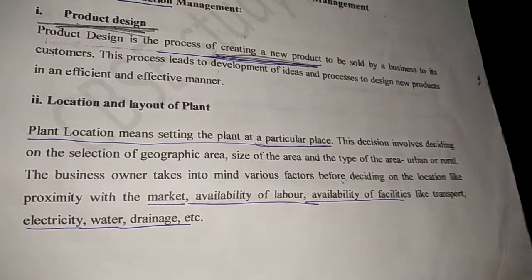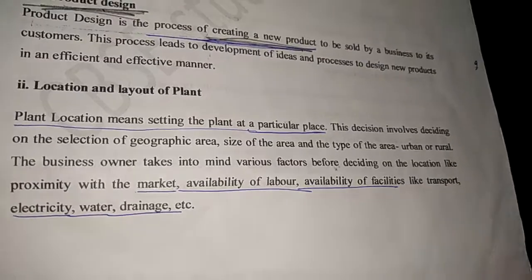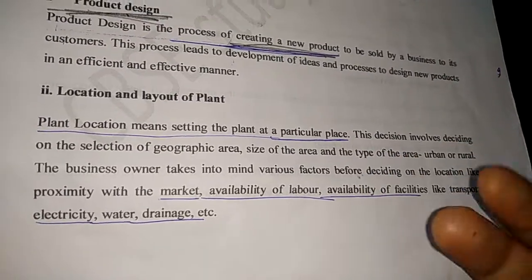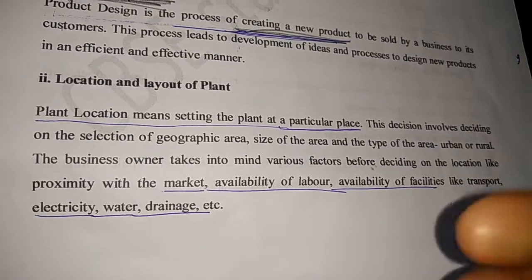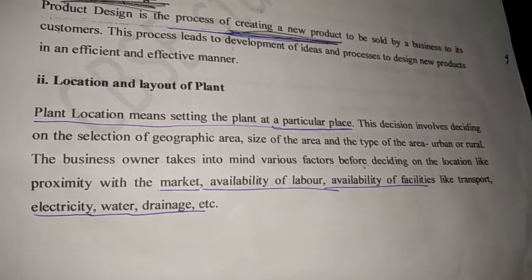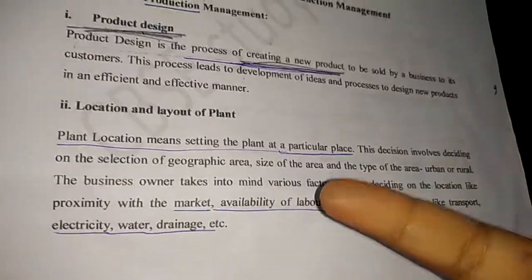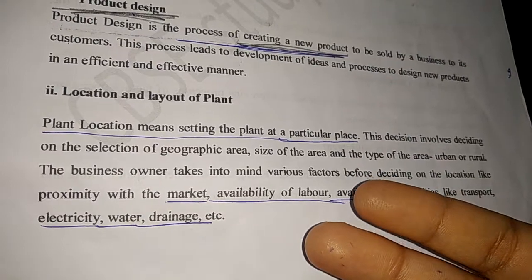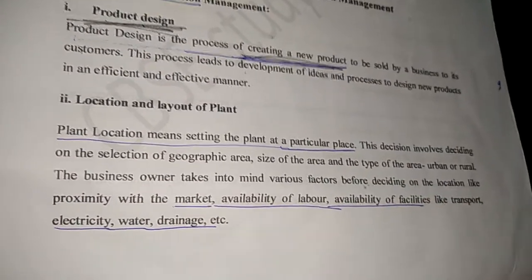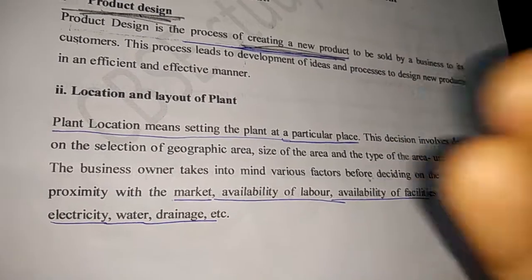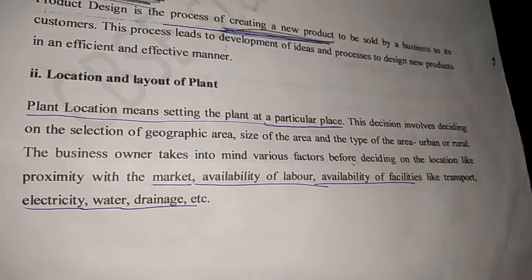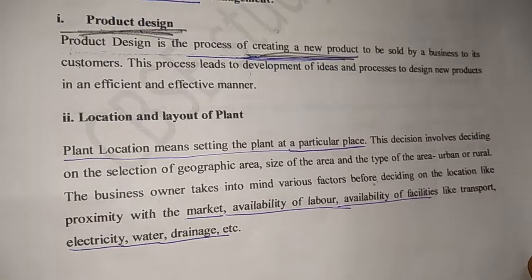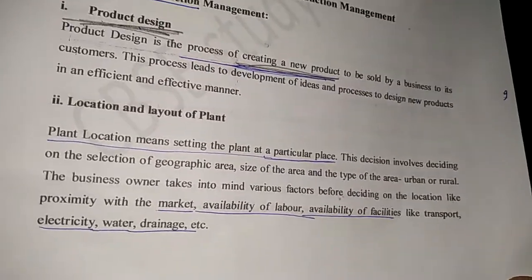Next is location and layout of plant. Plant location means setting the plant at a particular place. This decision involves selecting various factors like the geographical area — whether it is urban or rural — availability of raw material, availability of labor, and availability of basic facilities like electricity, transportation, infrastructure, water, and drainage system.